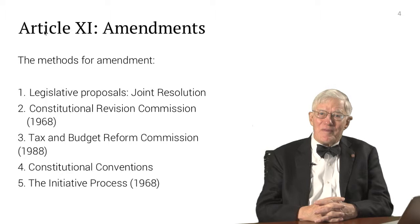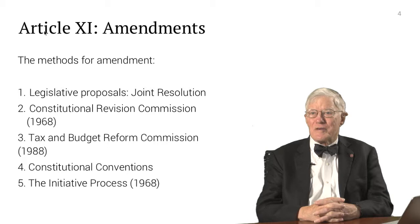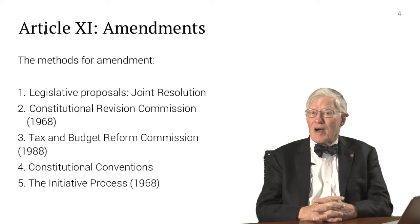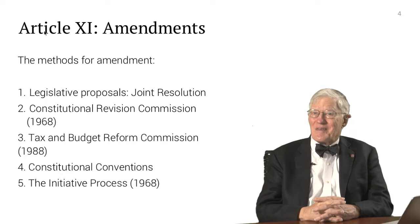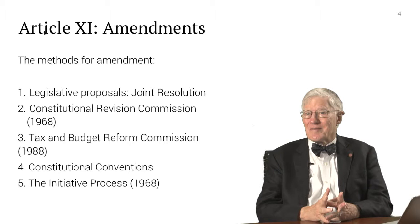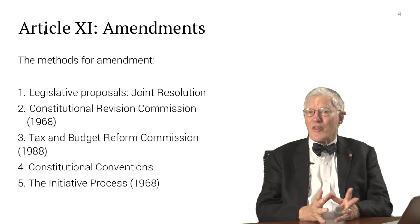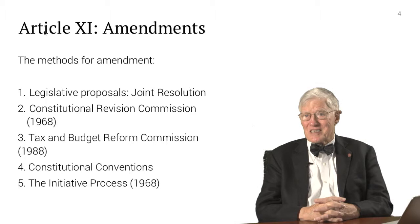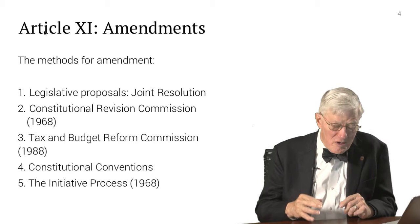Added in 1988 was a Tax and Budget Reform Commission, which we'll discuss along with its limitations. There is still in the Constitution a Constitutional Convention process — used for a number of our earlier constitutions, including the original Constitution drafted in 1838 at St. Joseph, Port St. Joe. It has not been used in recent years, and for reasons I'll explain, I think it's unlikely to be used again anytime soon. The fifth method, used quite often and quite effectively, is the initiative process, which we'll examine in detail along with the relevant case law.